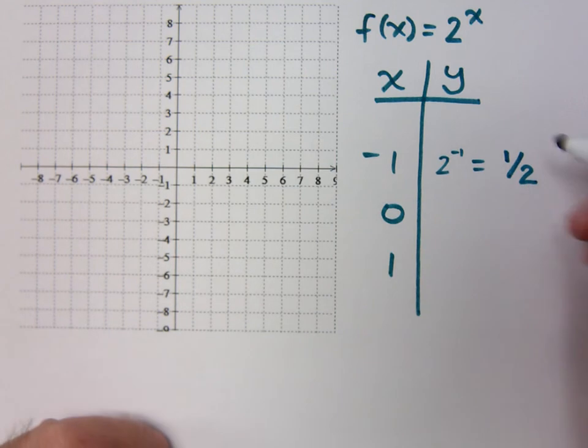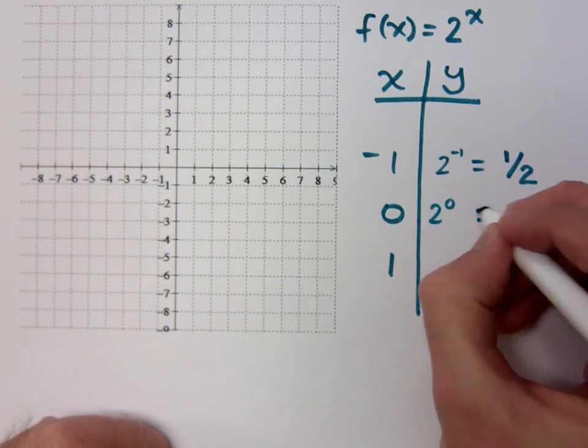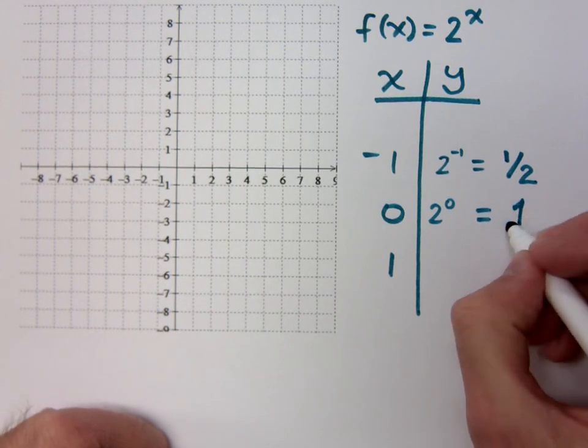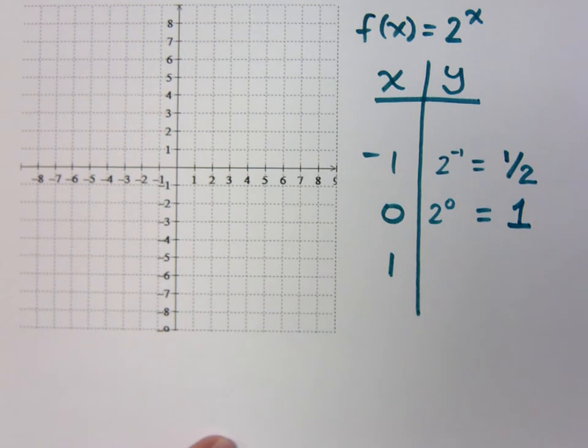If I plug in 0, I get 2 to the 0. What happens when I raise something to the 0 power? So we're saying that the exponent is a variable? Yeah, the base is going to stay the same. I'm just changing the exponent.